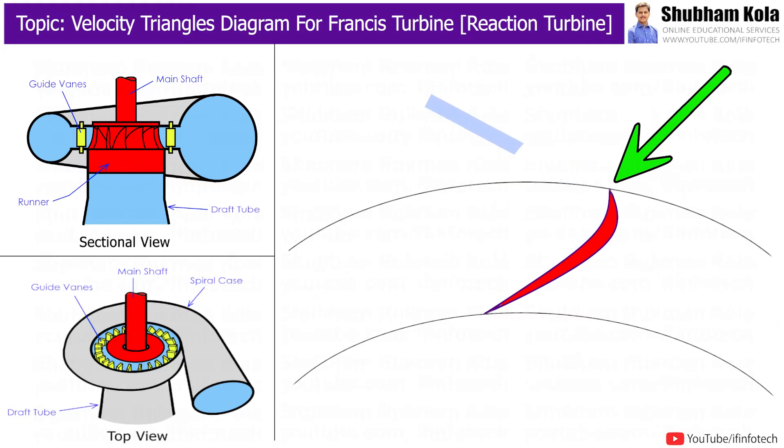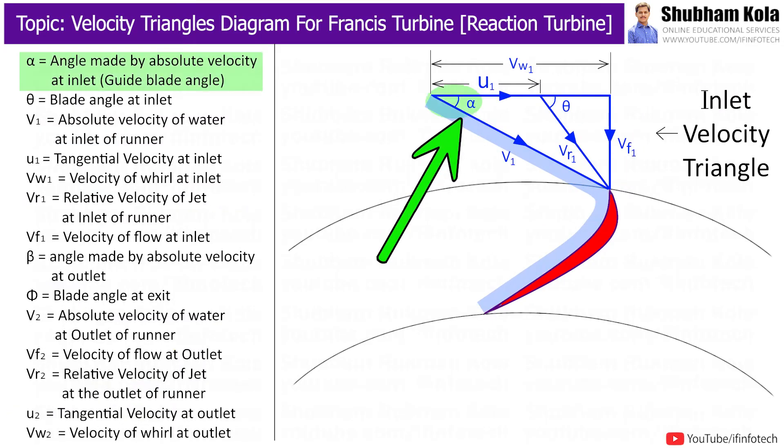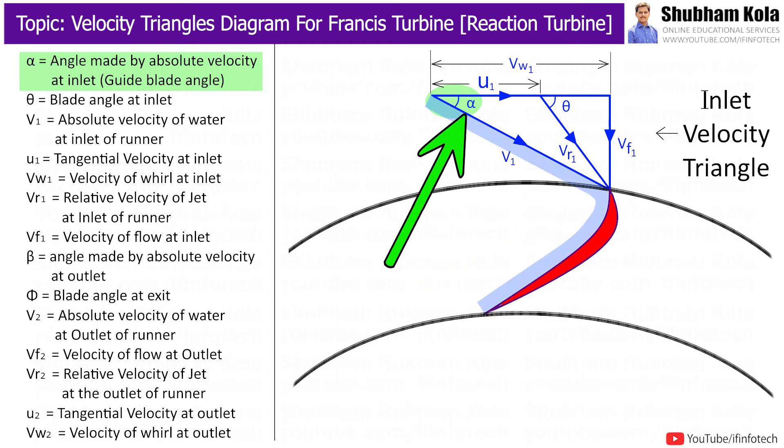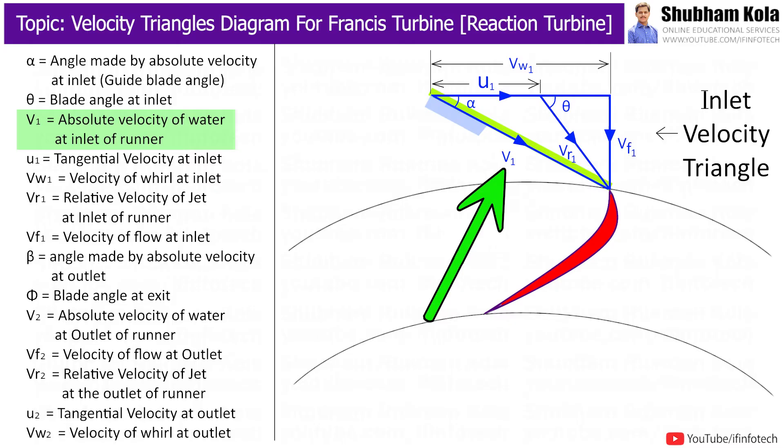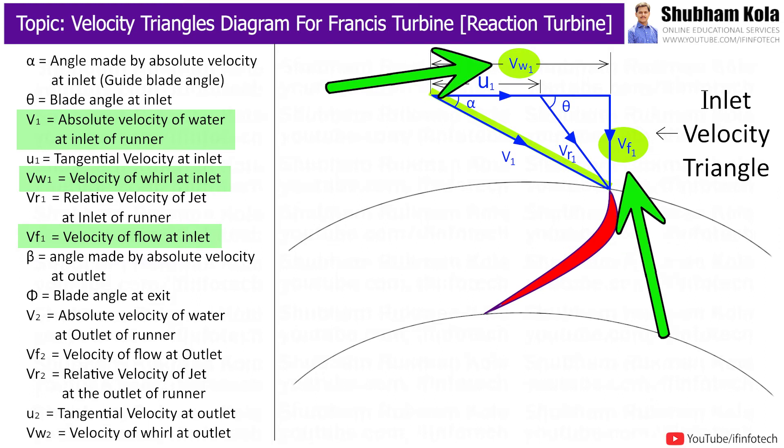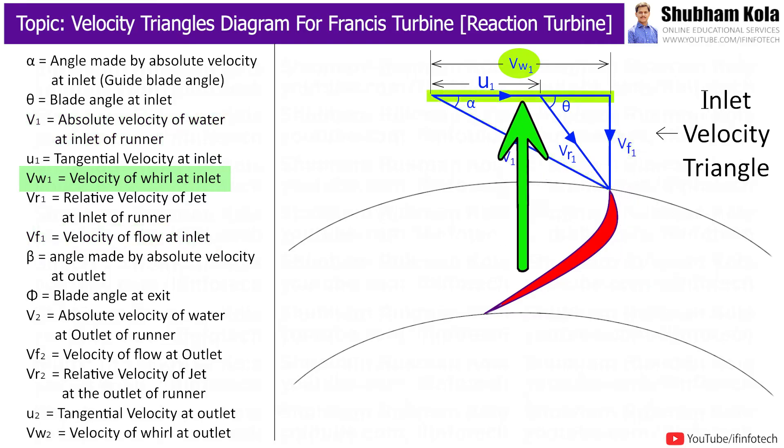The water jet with velocity v1 is struck tangentially to one end of blade at inlet and the angle of water at inlet is alpha to the runner. This means water coming from guide vanes to the runner at a certain angle and this angle is known as alpha. Now, this inclined line of absolute velocity of water at inlet is resolved in two components.